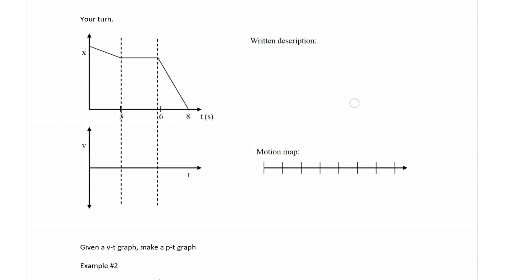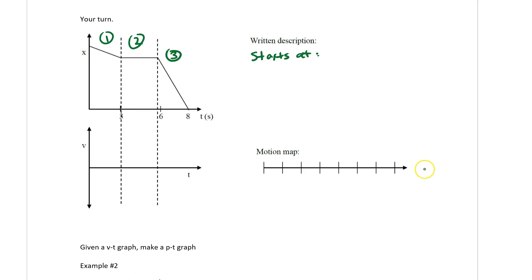Now it's your turn. Look at the position-time graph and write a short description — start with 'it starts at...' and then describe segments one, two, and three. Draw a motion map and then a velocity-time graph. Please hit pause now and do as much of this as you can, then I will show you a solution.